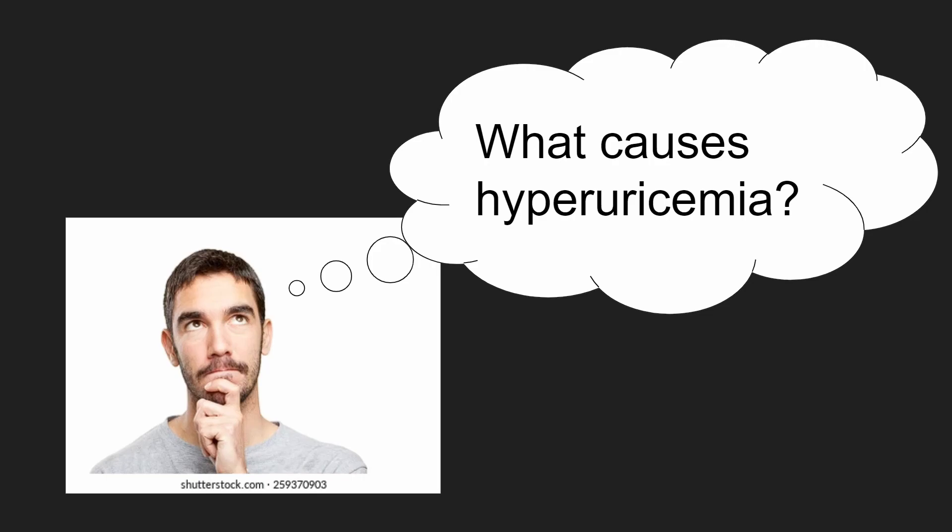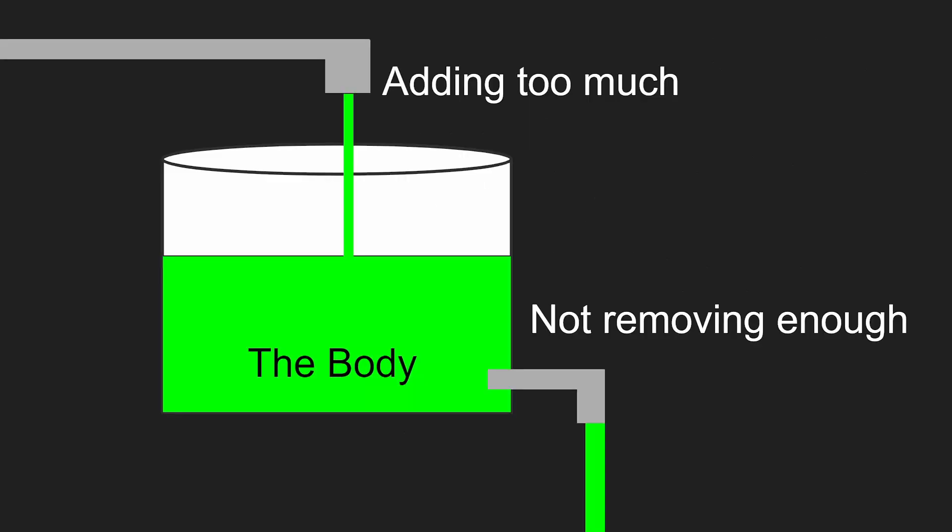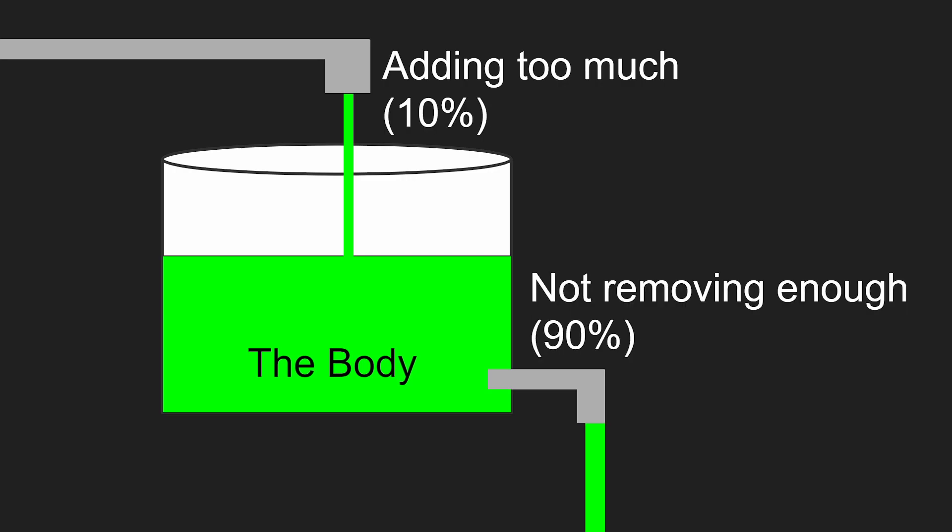So what causes too much uric acid in the blood? The answer can be broken down into two categories. Either too much is being added or not enough is being removed. Overall, the problem is usually that not enough is being removed.